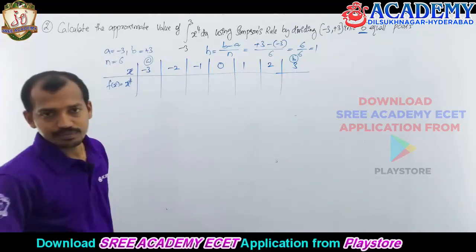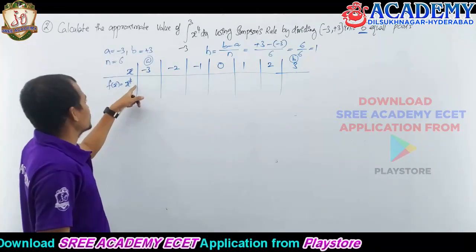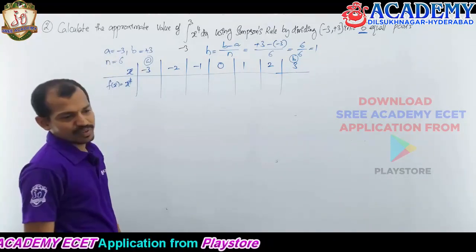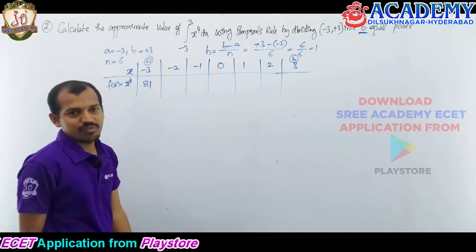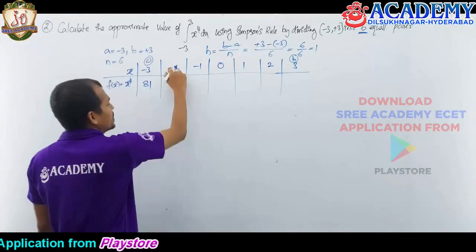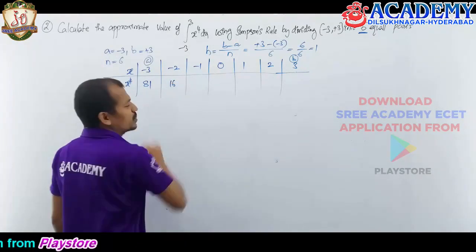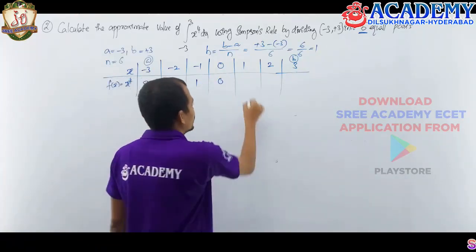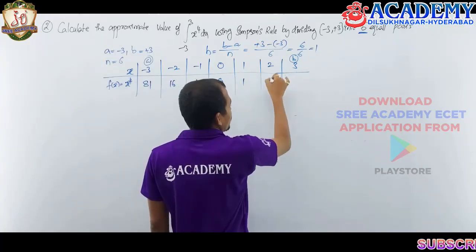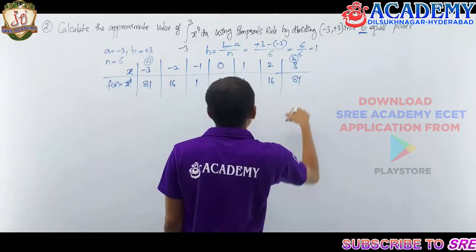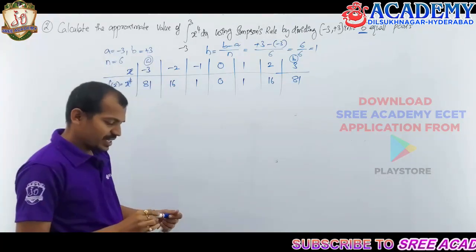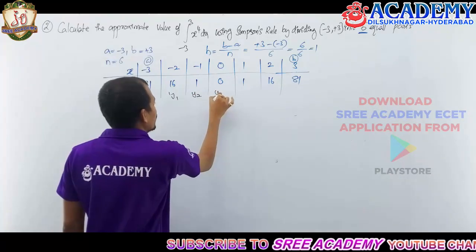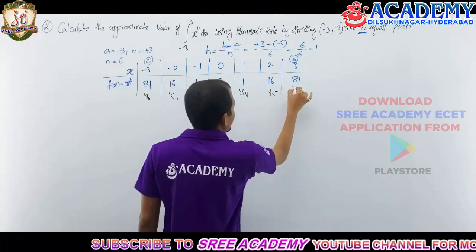Substituting into f(x) = x⁴ to get y values: y₀ = (−3)⁴ = 81, y₁ = (−2)⁴ = 16, y₂ = (−1)⁴ = 1, y₃ = 0⁴ = 0, y₄ = 1⁴ = 1, y₅ = 2⁴ = 16, y₆ = 3⁴ = 81. These are labeled y₀, y₁, y₂, y₃, y₄, y₅, y₆.